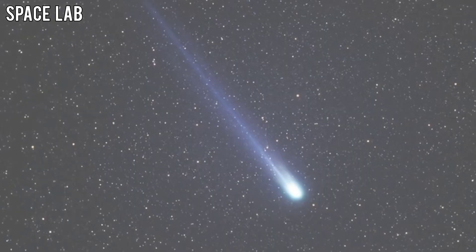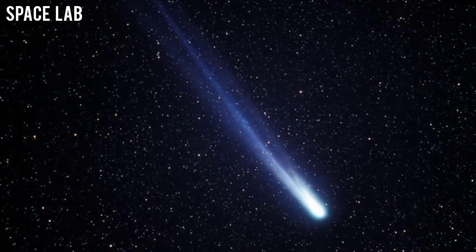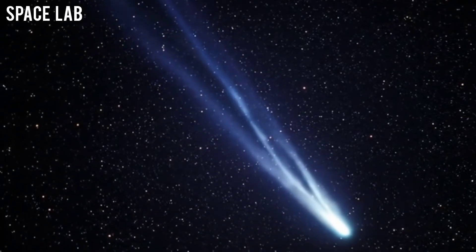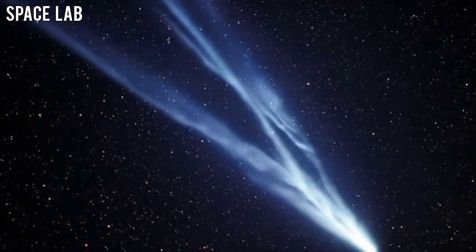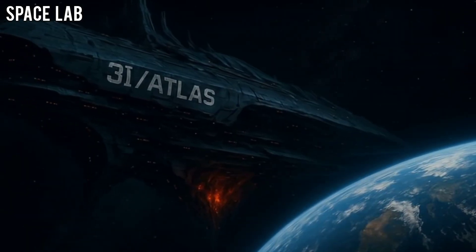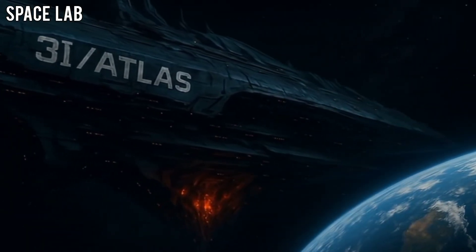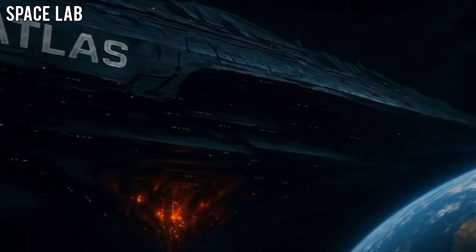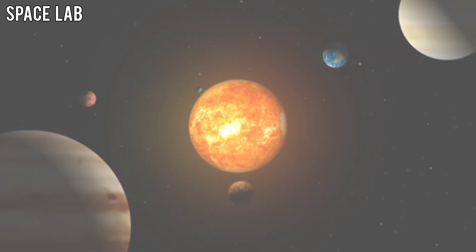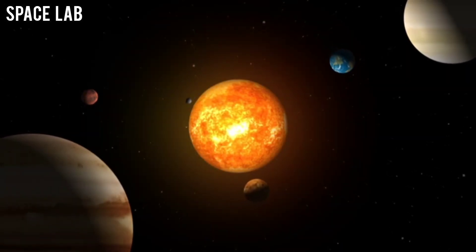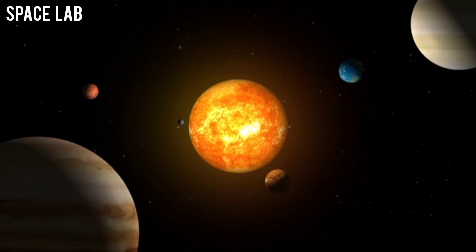Then came the energy signature. When 31 Atlas passed near Jupiter's magnetic field, instruments picked up a sudden spike of ionized metal: titanium, iridium, and something else, an element not naturally found in the solar system. It wasn't ice or dust. It was machined alloy.